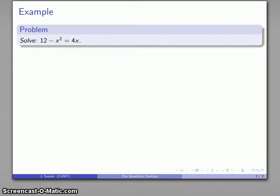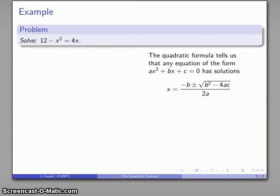We want to solve the equation 12 - x² = 4x. The first thing to notice here is that this equation has an x² in it, so we can apply the quadratic formula.